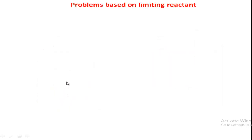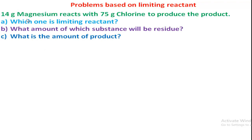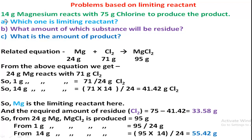Now we will practice some problems based on limiting reactant. For example: 14 grams of magnesium reacts with 75 grams of chlorine to produce the product. From this we can solve three types of problems: which one is the limiting reactant, what amount of which substance will remain unreacted after the reaction, and what is the amount of product produced.